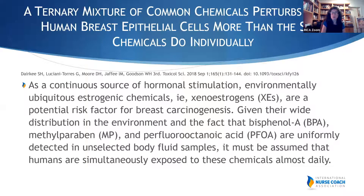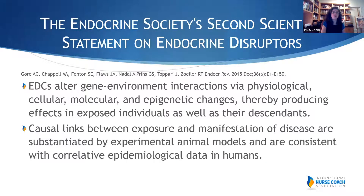Endocrine disruptors are ubiquitous — everything from plastic bottles to flame retardants on mattresses and clothing — with a cumulative effect. The Endocrine Society, a conservative medical organization, stated in 2015 that environmental endocrine disruptors alter gene-environment interactions via physiological, cellular, molecular, and epigenetic changes, producing effects in exposed individuals as well as their descendants. Studies show that even three generations out, offspring of mothers exposed to bisphenol A still have elevated levels — contributing to many problems including breast cancer.